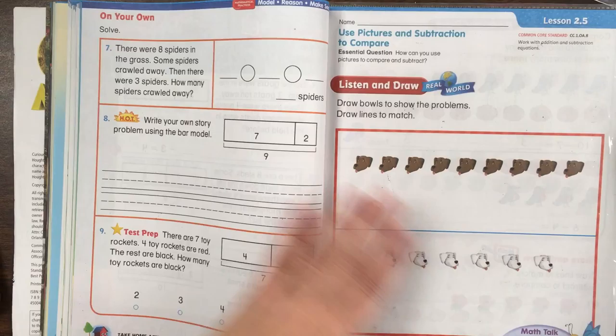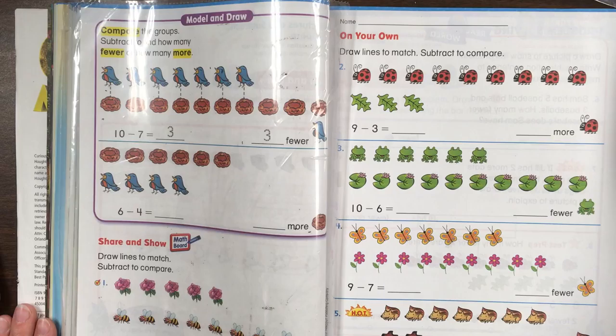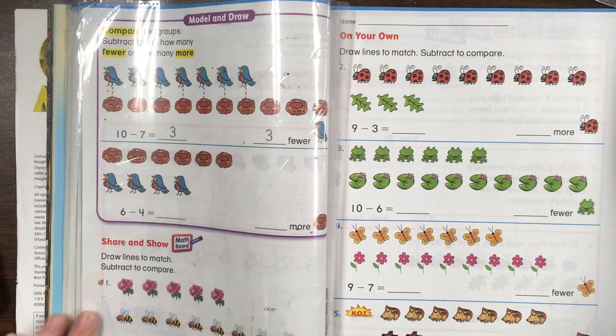Okay, let's take a look at the next page. Compare the groups. Subtract to find how many fewer or how many more.